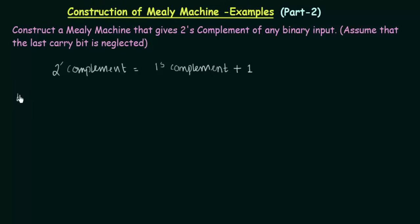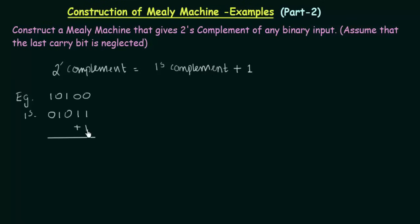Let's see some examples. We have the binary number 1 0 1 0 0. The 1's complement is very simple — just flip the bits: 1 becomes 0, 0 becomes 1. So here it is 0 1 0 1 1. For the 2's complement, we add 1 to this. 1 plus 1 is 0 carry 1, carry 1 plus 1 gives 0 carry 1, carry 1 plus 0 gives 1. So the 2's complement is 0 1 1 0 0.